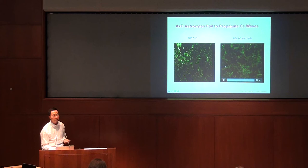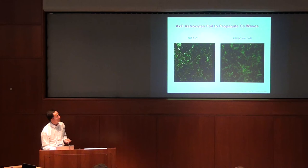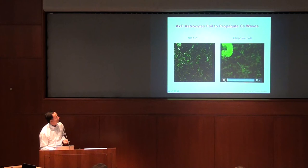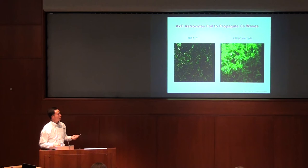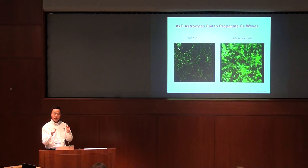But the next image is from the same patient, but with the mutation already corrected. We did the same experiment — we touched this area — and then the signal goes through. So once the mutation is corrected, from the same patient, the signal propagates. So what this says is that the communication between astrocytes is altered by the GFAP mutation.